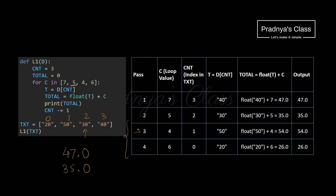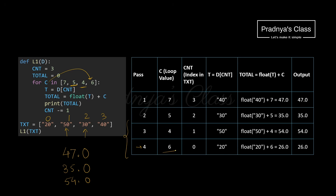In pass three c is 4 and c_and_t decrements to 1. d[1] is '50', which becomes 54.0 when added to c (4). In pass four c is 6 and c_and_t decrements to 0. d[0] is '20', 20.0 plus 6 gives 26.0. So the four outputs are 47.0, 35.0, 54.0, and 26.0.